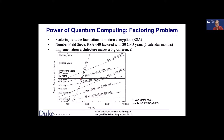They estimated a data point for factoring a 512-bit number using 2003 computing technology. To factor a 1024-bit integer would take tens of millions, if not billions, of years using that technology. Once we go to quantum algorithms — specifically a quantum computer running Shor's algorithm at a clock speed of one hertz, meaning one logic gate per second — the exponential scaling fundamentally changes to polynomial scaling. That's the real power of Shor's algorithm.